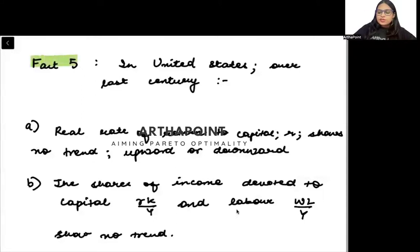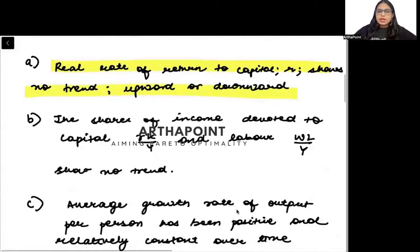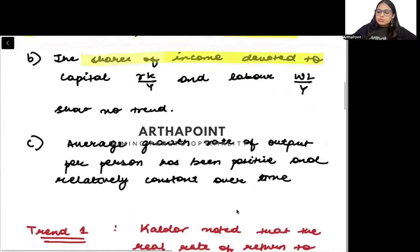Let us look at fact 5 now. In US over the last century, real rate of return on capital has remained same. It has shown no trend. The share of income devoted to capital and labor has shown no trend. It has remained the same.